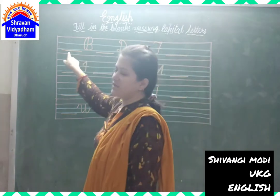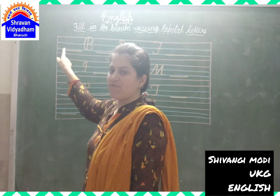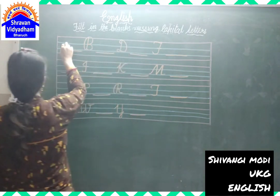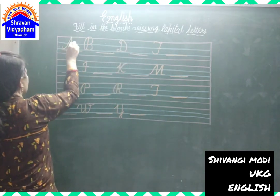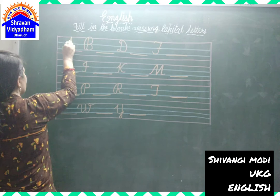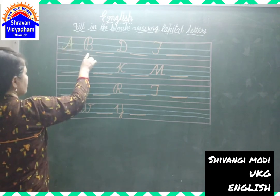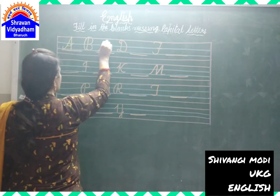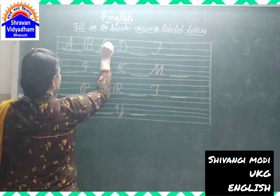So first we write down the A. A for Apple. B for Wall. C for Cat.